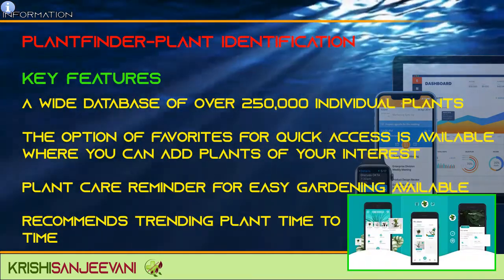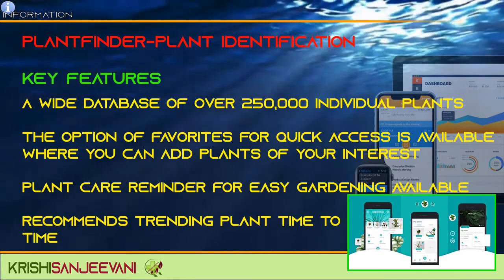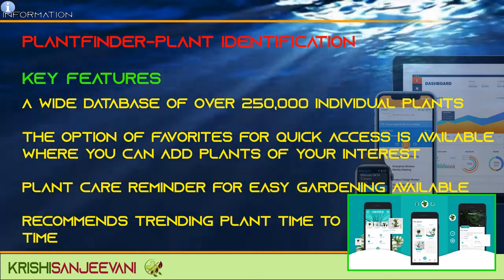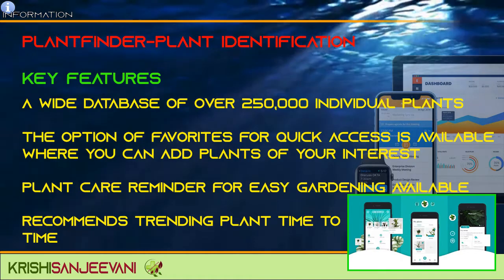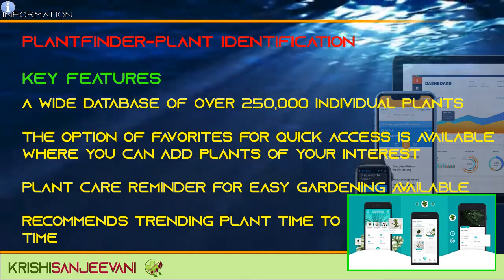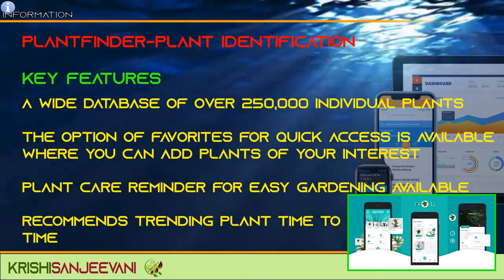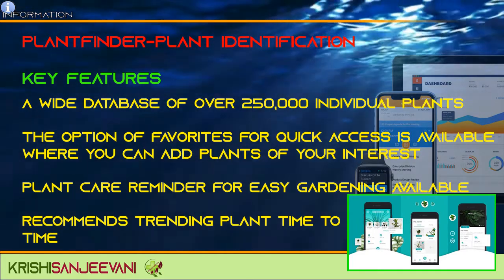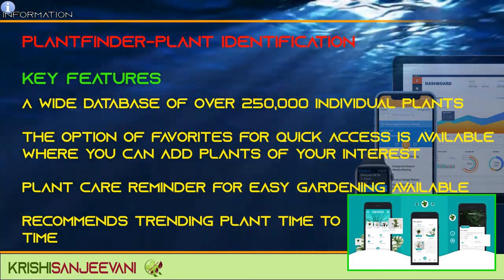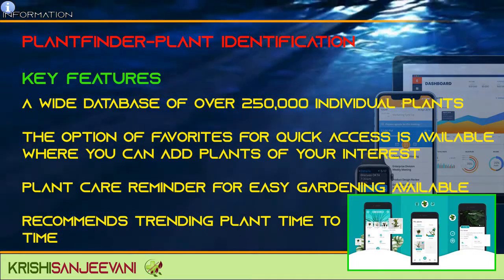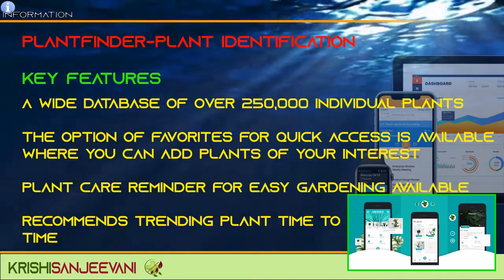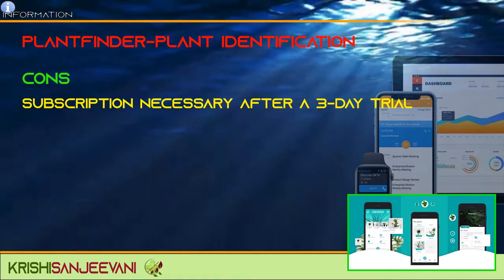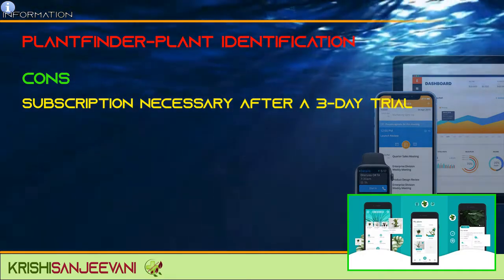Plant Finder — plant identification. Key features: a wide database of over 25,000 individual plants; a favorites option for quick access where you can add plants of interest; plant care reminders for easy gardening; recommends trending plants from time to time. Cons: Subscription necessary after a 3-day trial.